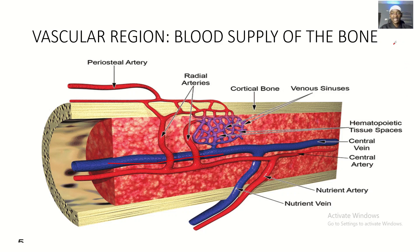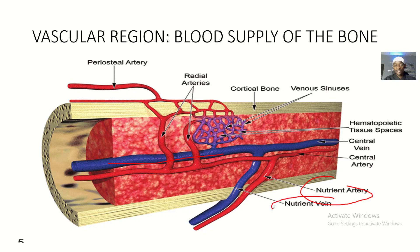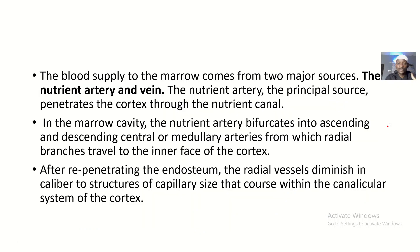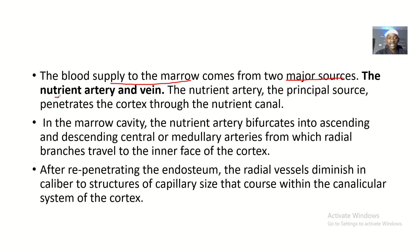Blood supply to the bone marrow is through the nutrient artery, and blood drainage is through the nutrient vein. They communicate via the venous sinuses, or via capillaries, where arteries become arterioles, arterioles become venules, and venules become veins. Blood supply to the bone marrow comes from two major sources: the nutrient artery supplying blood and the nutrient vein taking blood away.